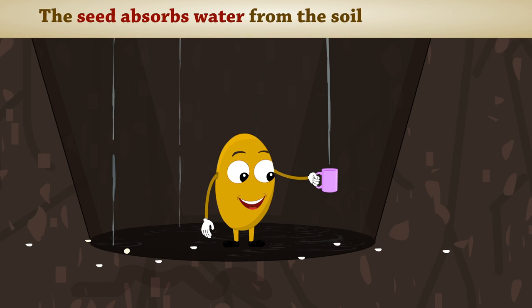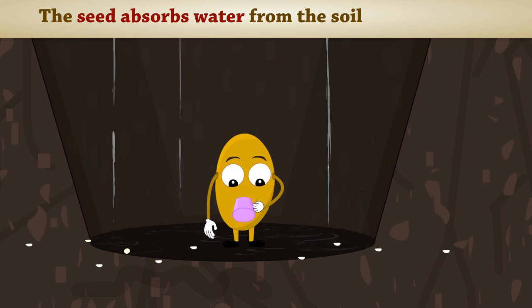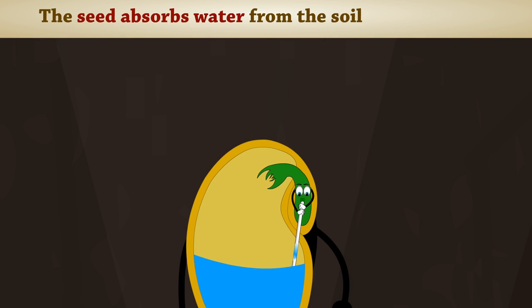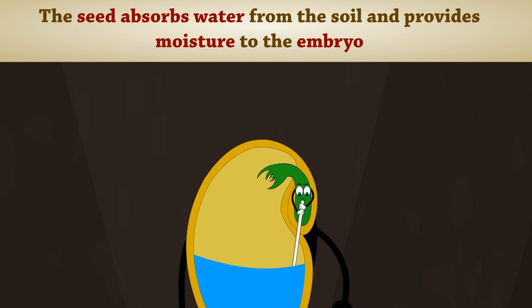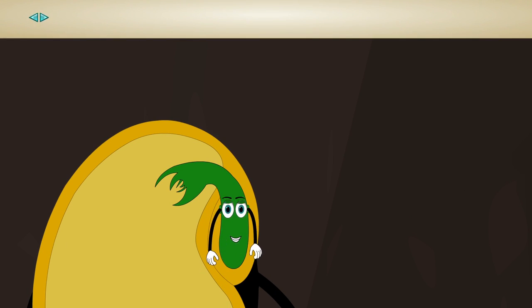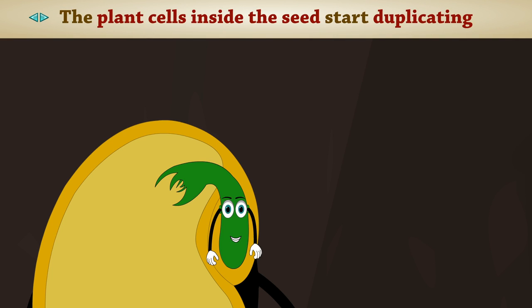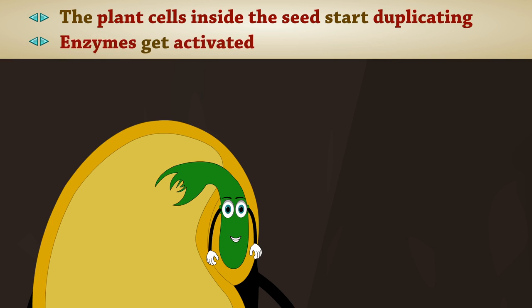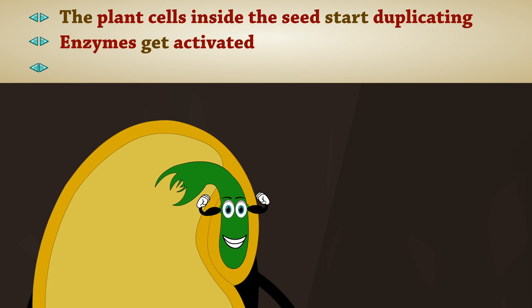The seed absorbs water from the soil and provides moisture to the embryo. The plant cells inside the seed start duplicating. Enzymes get activated. Embryo starts getting nourishment.